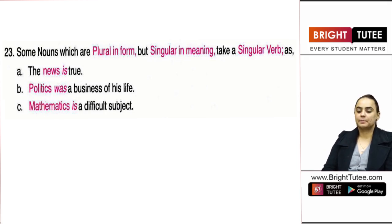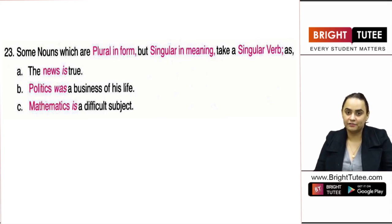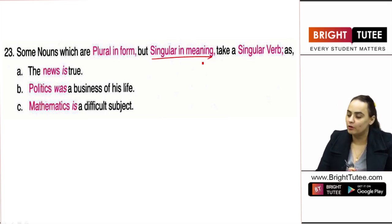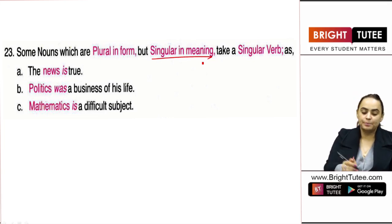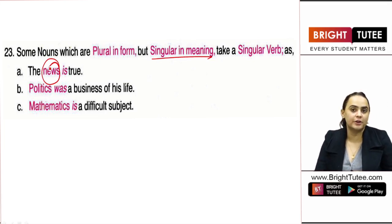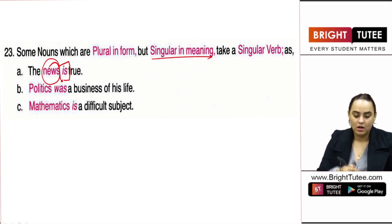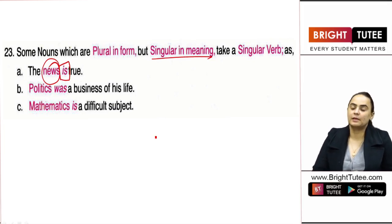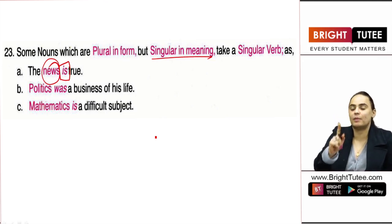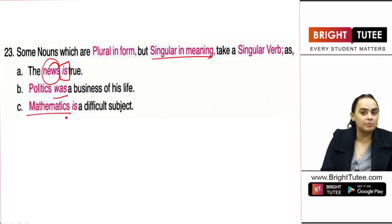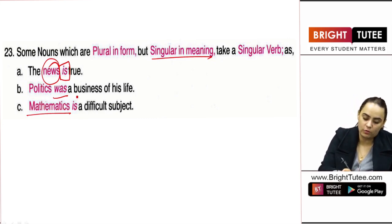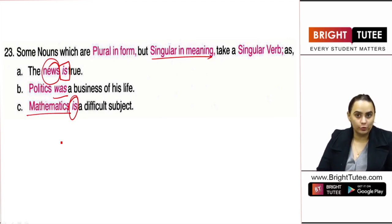The next rule says there are some nouns which seem to be plural but the meaning is singular, and therefore they take a singular verb. For example: 'news' — although it has an 'S' at the end, it is singular, so 'is.' 'Politics' — has an 'S' at the end but represents one term, so 'was.' 'Mathematics' — has an 'S' at the end but is just one stream of subject, so 'is.' Nouns which seem plural but are actually singular take a singular verb.